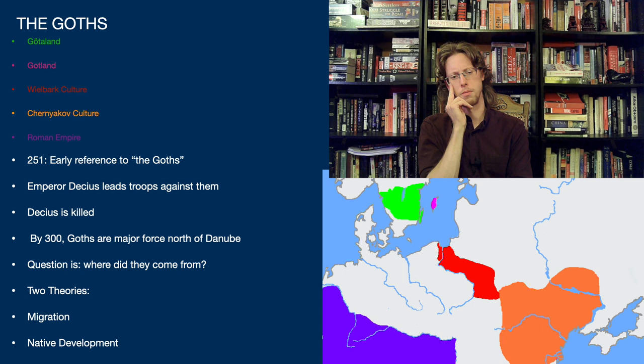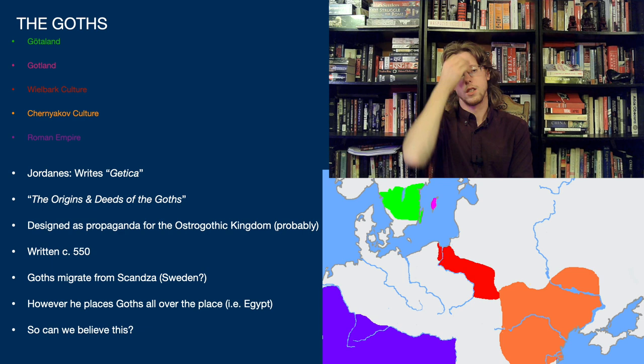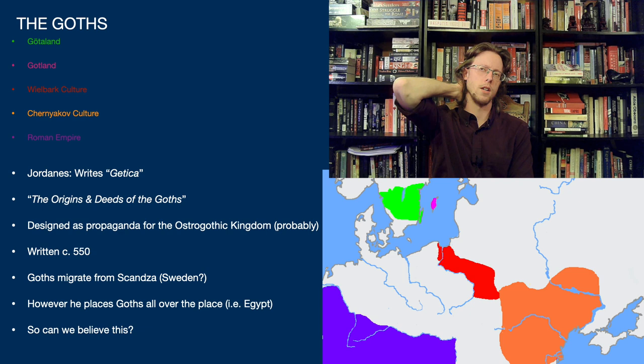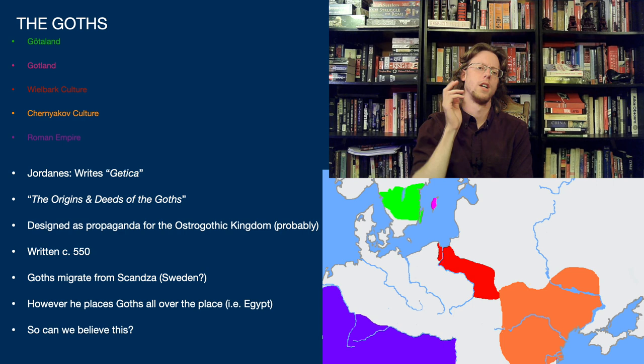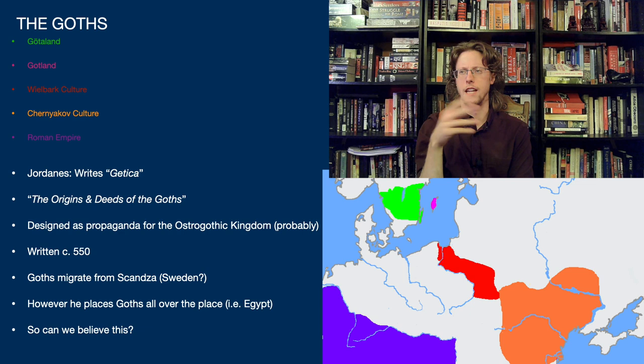The question is: where do these people come from? We have two theories — native development and migration. The main source arguing for migration is the textual source the Getica, written by Jordanes. This has problems: Jordanes is using an older history of the Goths, which has not survived, as part of his basis for constructing this narrative. It's written around 550 CE, well after the Goths have moved into the Roman Empire and set up their own Ostrogothic kingdom in basically Italy and the Adriatic coast of the Balkans.